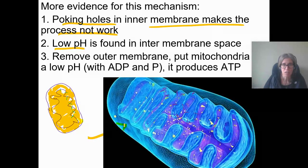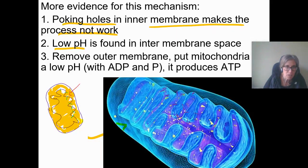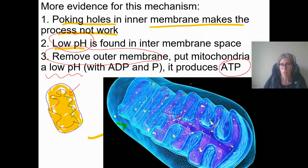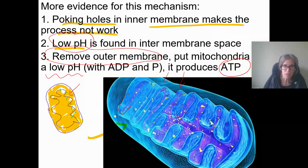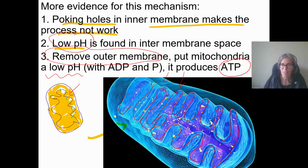Another piece of evidence is that there's low pH in the intermembrane space. Also, if you put mitochondria in a low pH environment — even without removing the outer membrane — they'll still produce ATP without any food. The protons can diffuse through the outer membrane but not through the inner membrane, unless they're going through ATP synthase or being moved by the electron transport chain. So giving them an acidic environment — the same thing Peter Mitchell found with bacteria — still lets them make ATP.